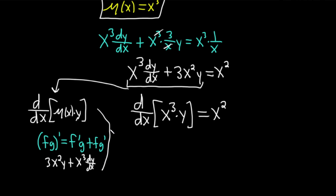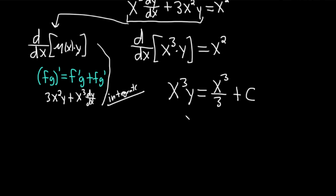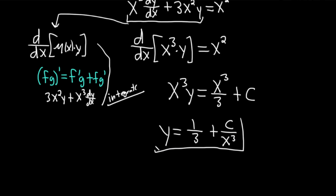We need to get rid of the d/dx, so integrating both sides: the d/dx goes away, giving x cubed times y equals — using the power rule on x squared, we add one to the exponent and divide by the result: x cubed over three, plus a constant of integration c. Now dividing by x cubed: y equals one third plus c over x cubed. That would be the solution to the differential equation.